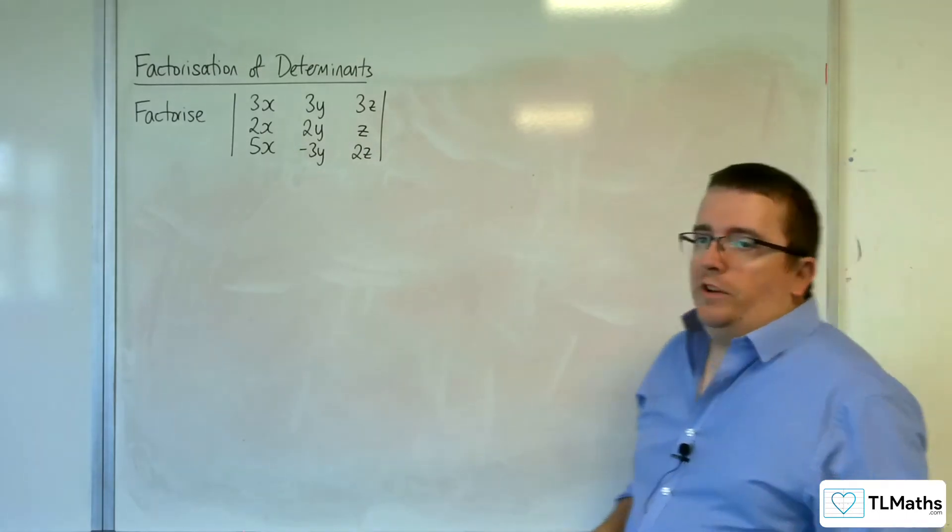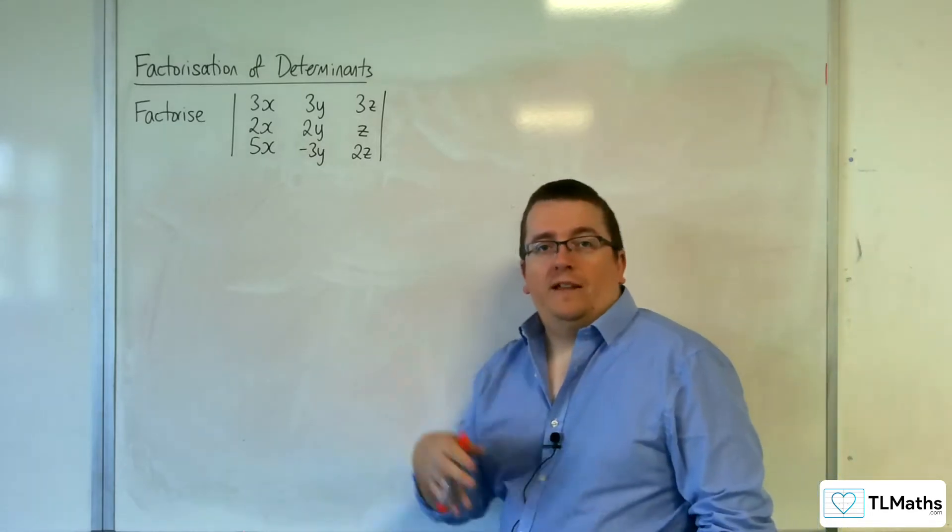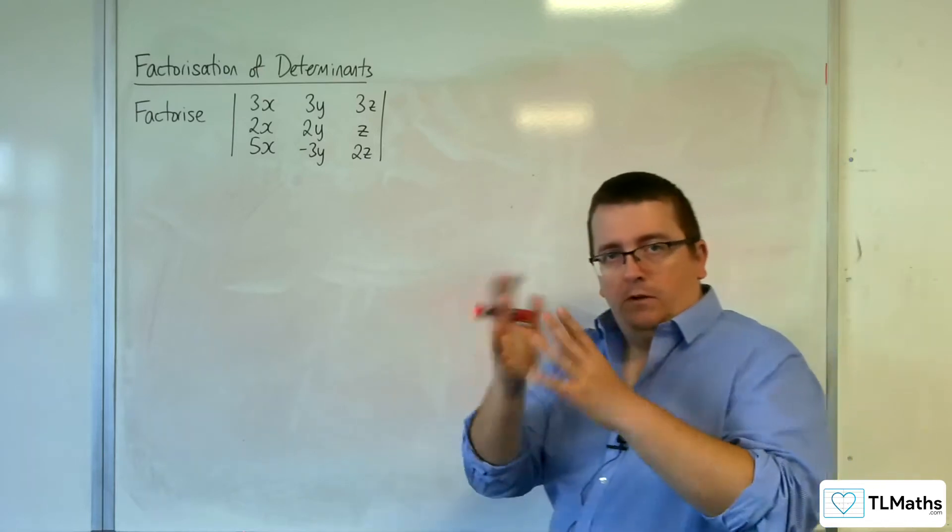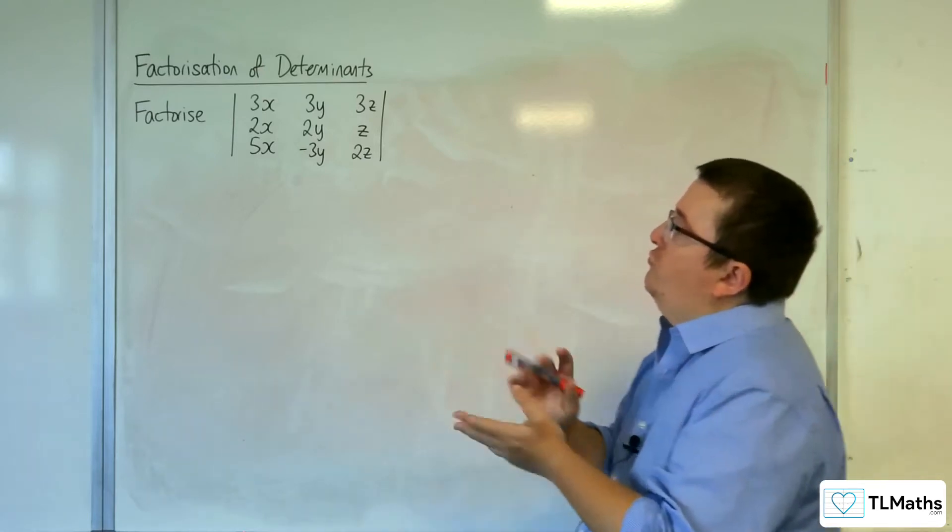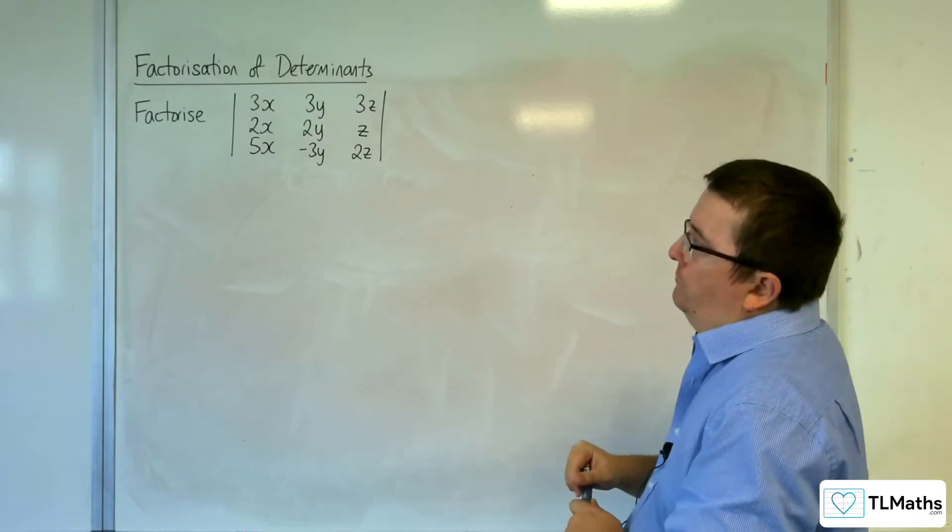Remember, what you're trying to do is trying to get some zeros, preferably in a top row or left-hand column, but we can obviously swap rows and columns around as we need to, as we saw in the rules, by adding in a negative.